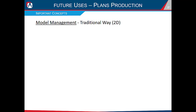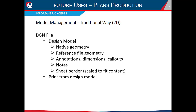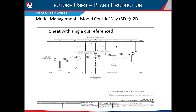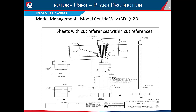Another important concept is model management. In the traditional 2D workflow, a DGN file contains a single design model with native geometry, reference file geometry, annotations, notes, and a border scaled to fit — and you simply print from the design model. In the model-centric 3D-to-2D workflow, it depends on the sheet content, and there are a few different workflows: a sheet with a single cut reference, a sheet with multiple cut references, and a sheet with cut references within other cut references.